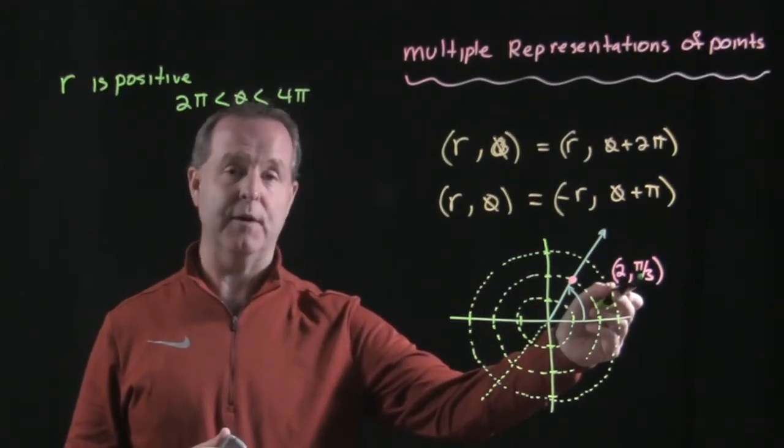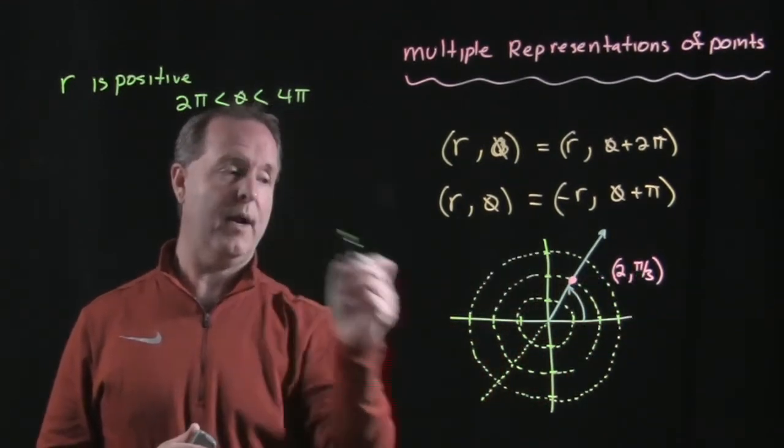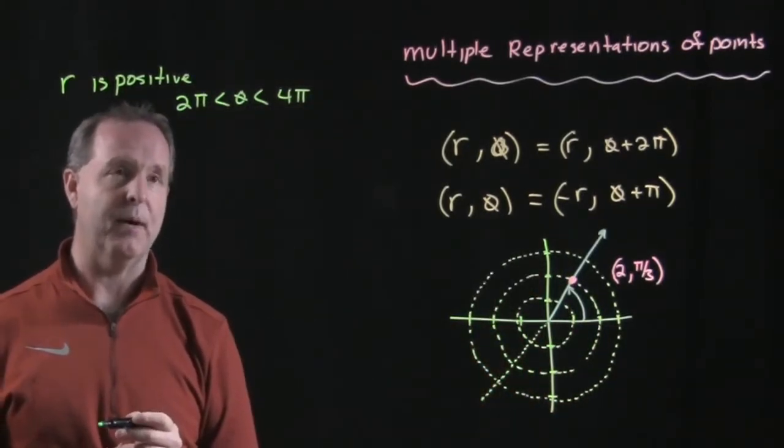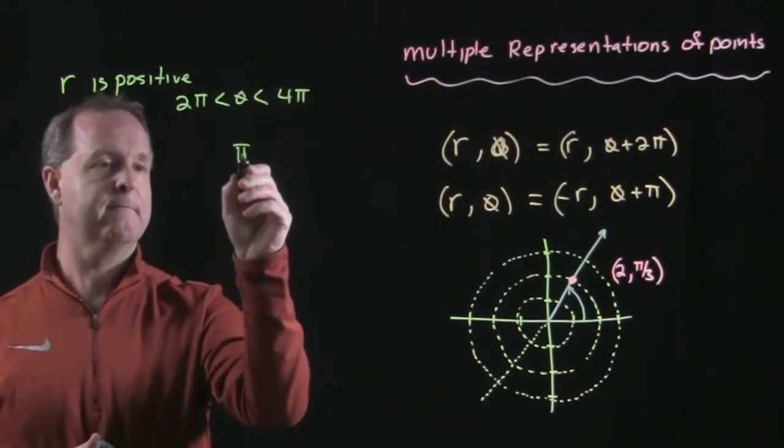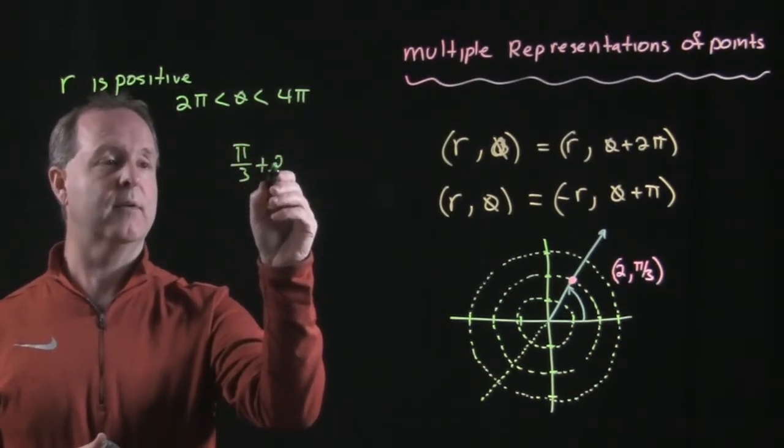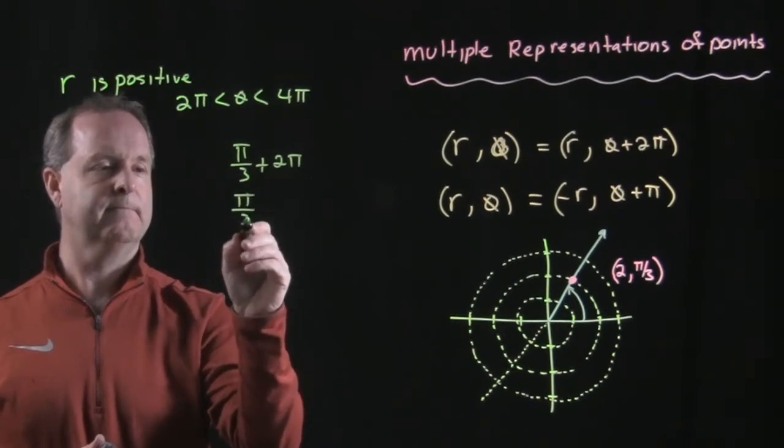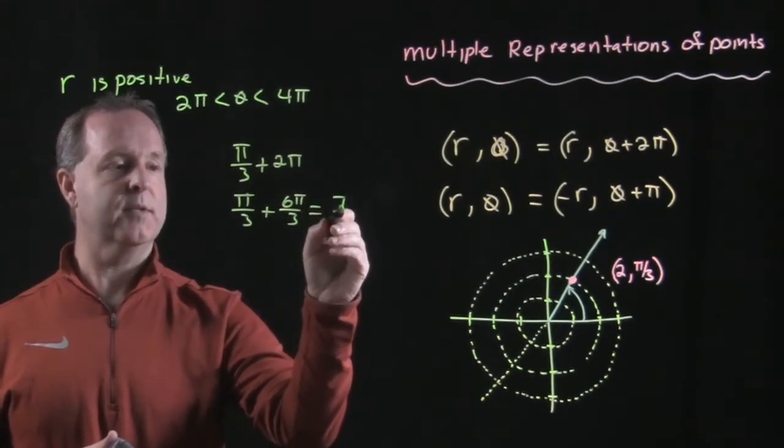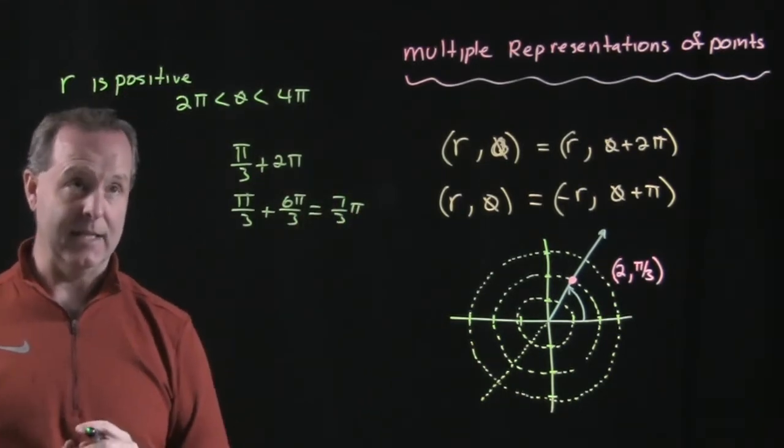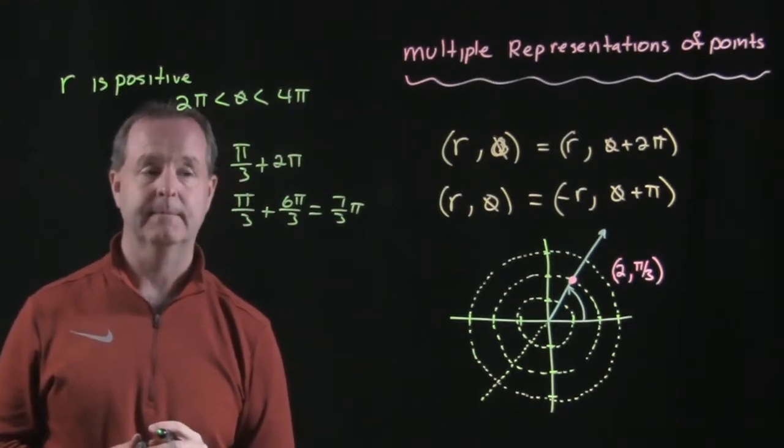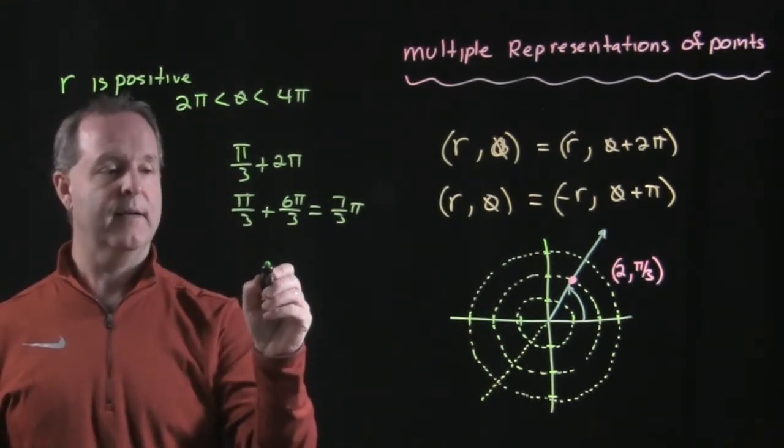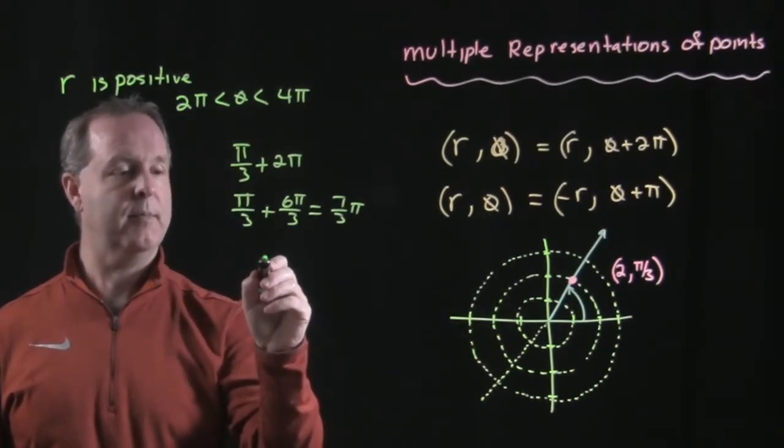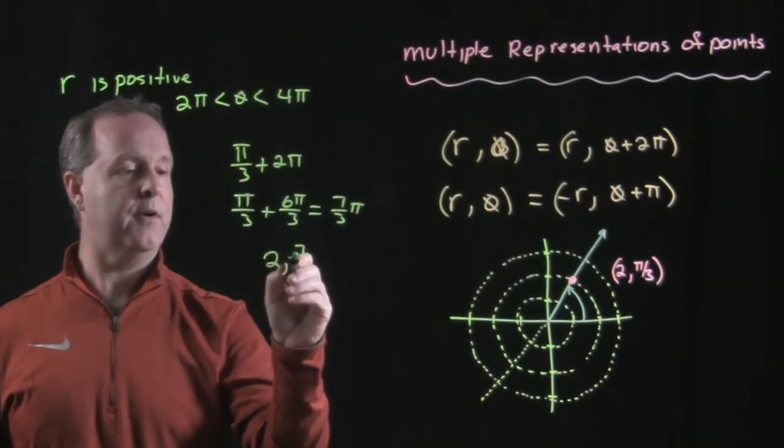My initial position is π/3. I want it to go around at least one more complete revolution, and that's going to be a θ between 2π and 4π. So let's take π/3, add 2π to it, that's 6π/3, and that equals 7π/3. That θ is between 2π and 4π, so I would have another representation of that exact same point, which would be the point (2, 7π/3).